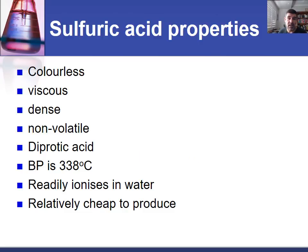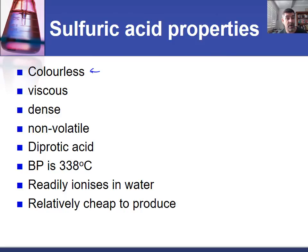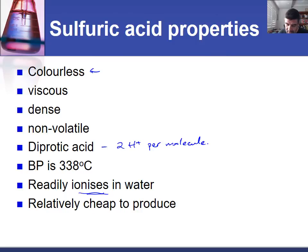Some of the properties to start us off: sulfuric acid is a colorless substance, it's viscous, it can be poured, it's dense and non-volatile, it is a diprotic acid so it liberates two H+ ions per molecule, it has a boiling point of around 338 degrees C, it readily ionizes in water which makes it a strong acid, and it's relatively cheap to produce.